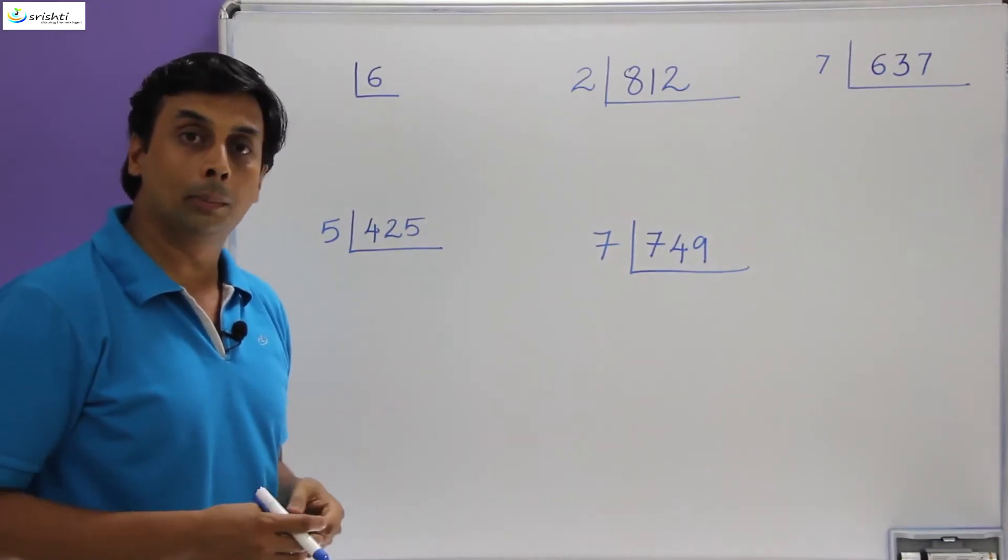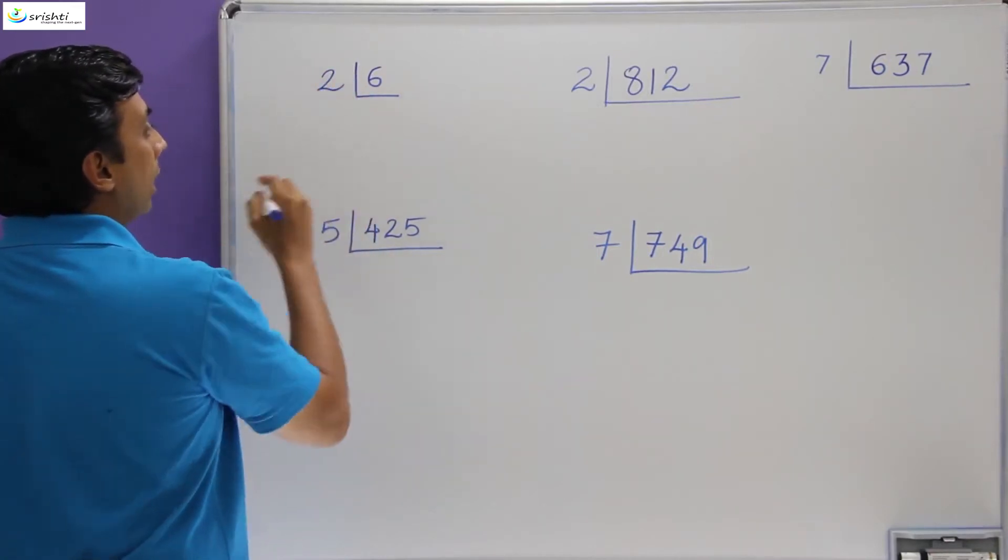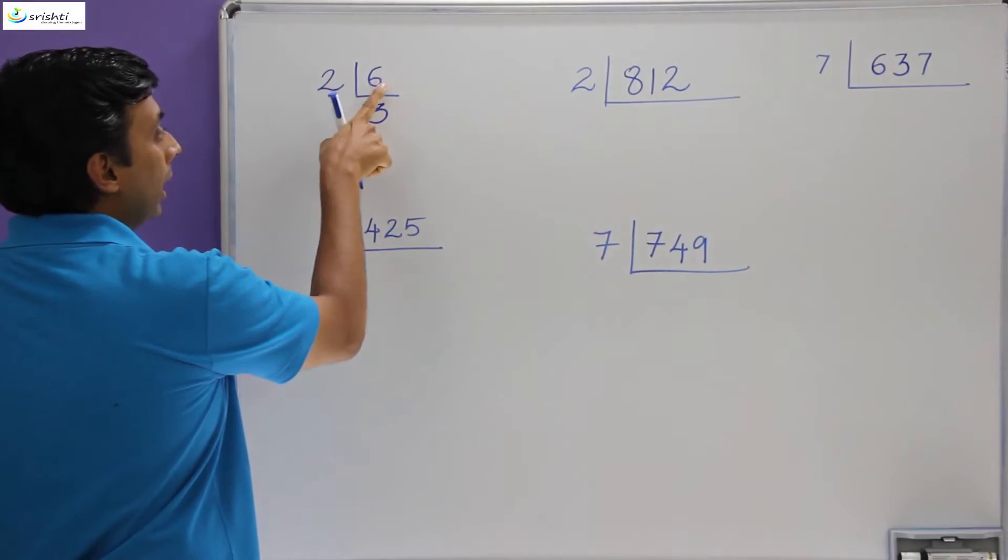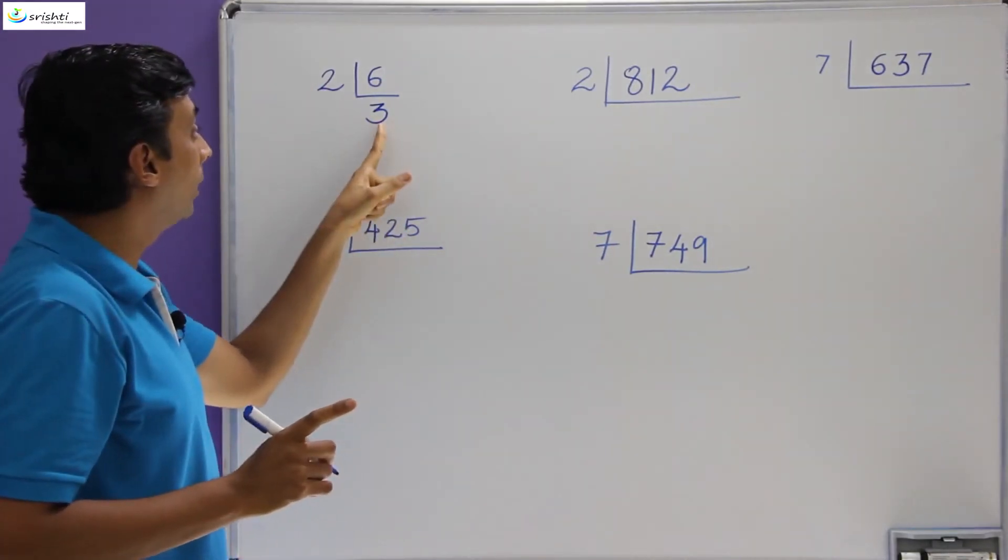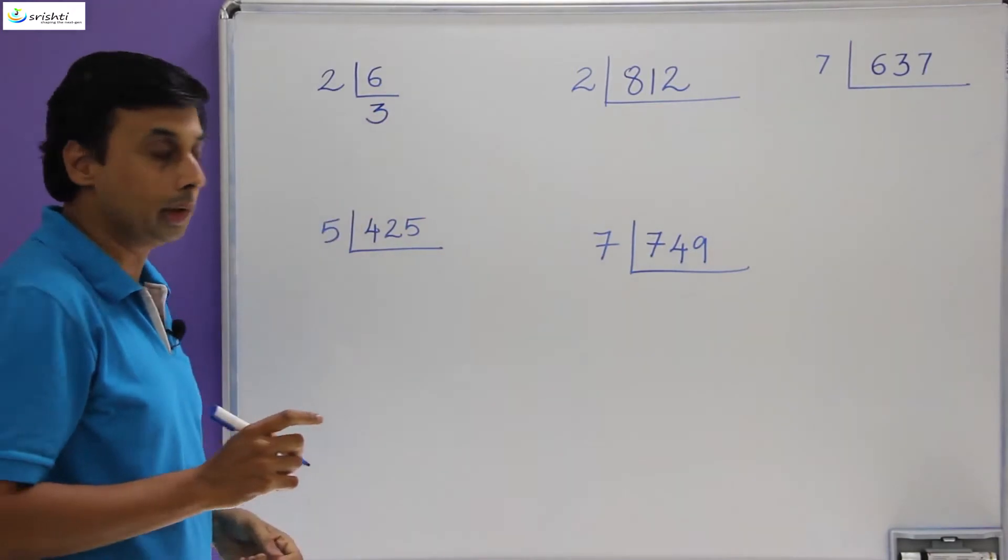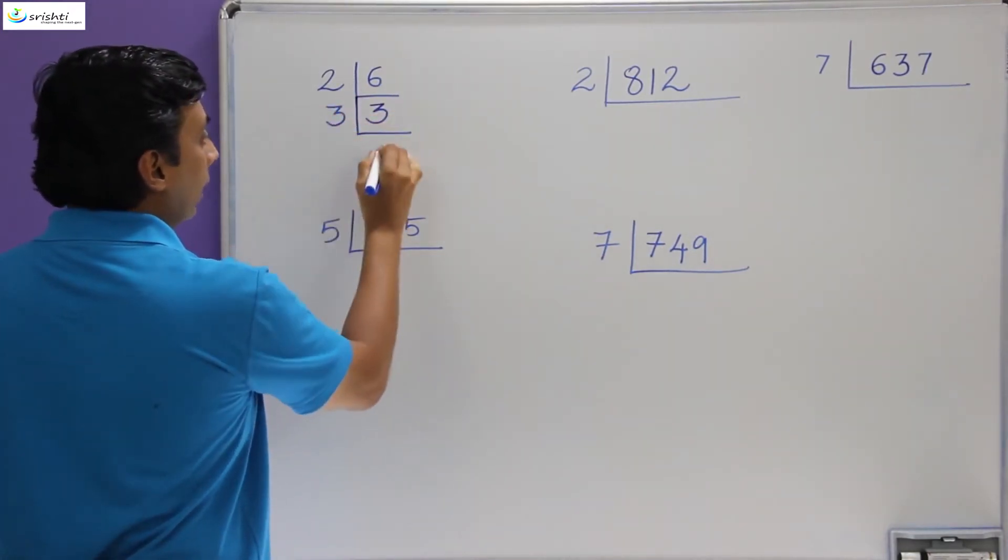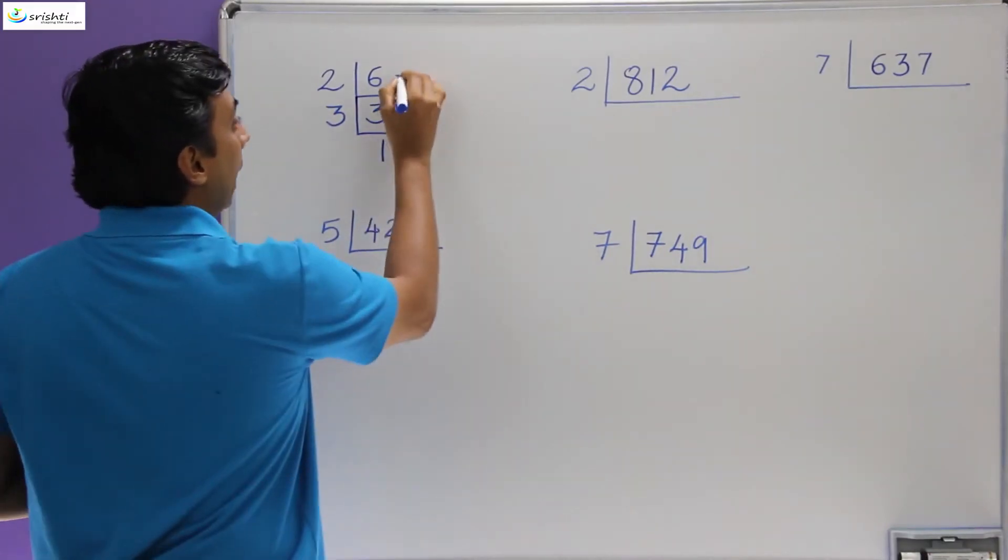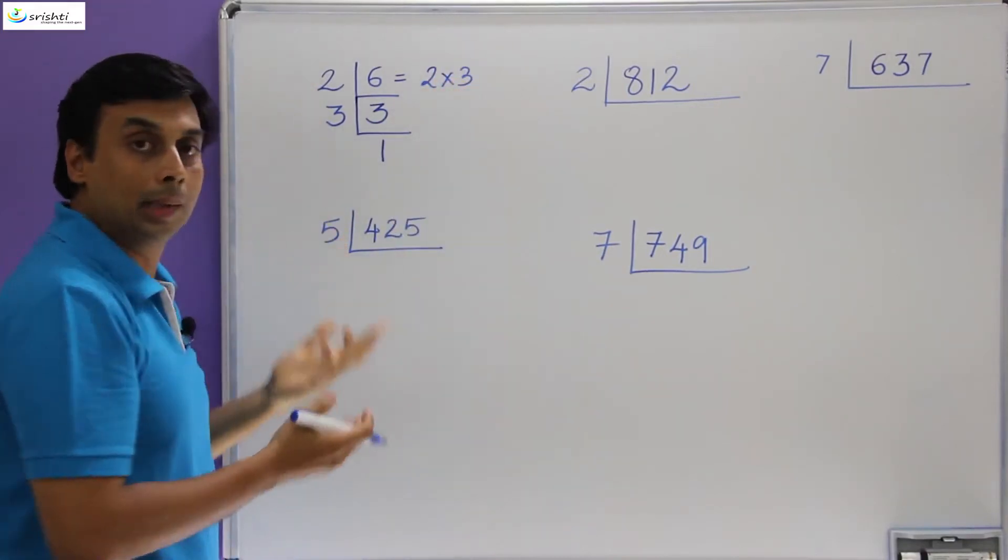So if I take the number six—I have taken a smaller number as the first example—if I take the number six, six is divisible by two. So if I divide six by two, I get three. Six divided by two is three, which means two multiplied by three is six. And now this three is again divisible by three, so I get the answer as one. Therefore, six can be written as product of two and three.